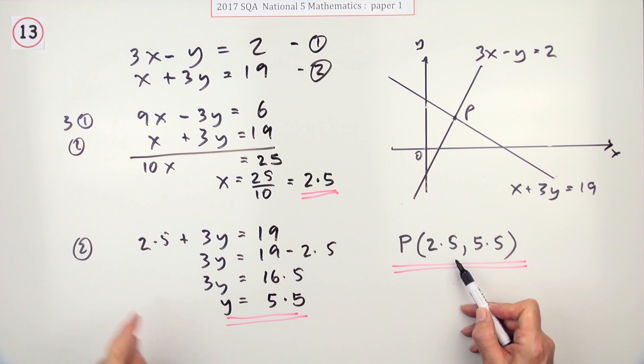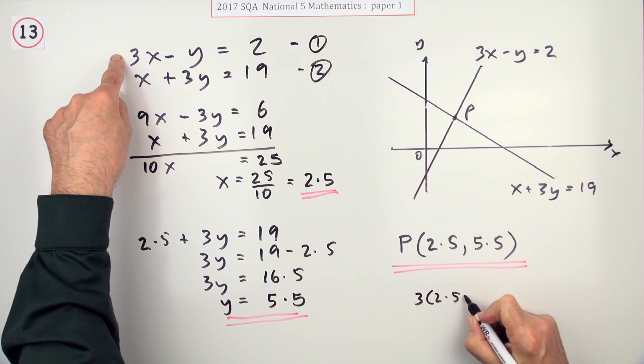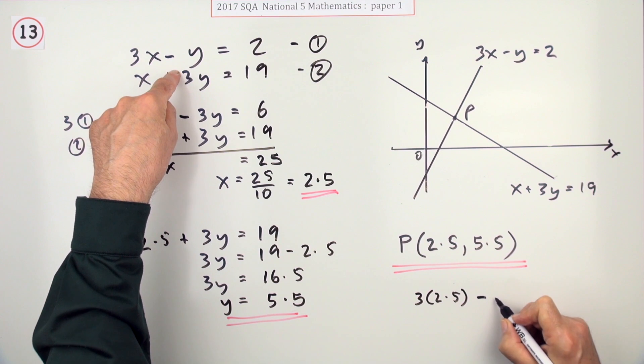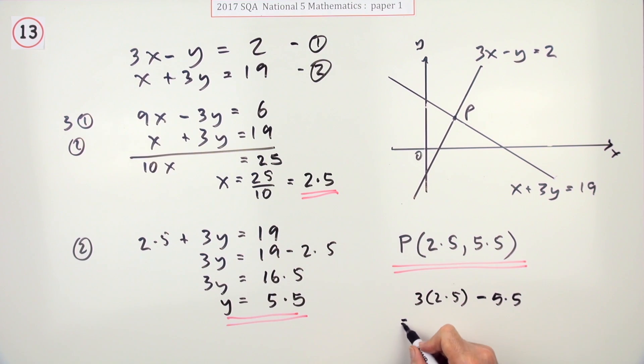Now you can always check that because I used equation 2 to get this one. So I could check if that works with equation 1 here. Is 3 times 2.5 minus 5.5 equal to that?